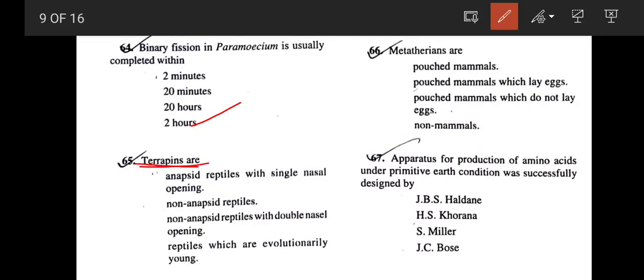Next question: Terrapins. Terrapins are anapsids, that means under the turtles and tortoise group. So obviously, all the options say non-anapsid. Correct answer would be option A: anapsid reptiles with single nasal opening. Next: Metatherians are? Under Metatheria we can find the marsupials. Obviously, they are pouched mammals. Pouched mammals which lay eggs, pouched mammals which do not lay eggs, or non-mammals? Correct answer is option C: pouched mammals which do not lay eggs. They are viviparous, not oviparous.